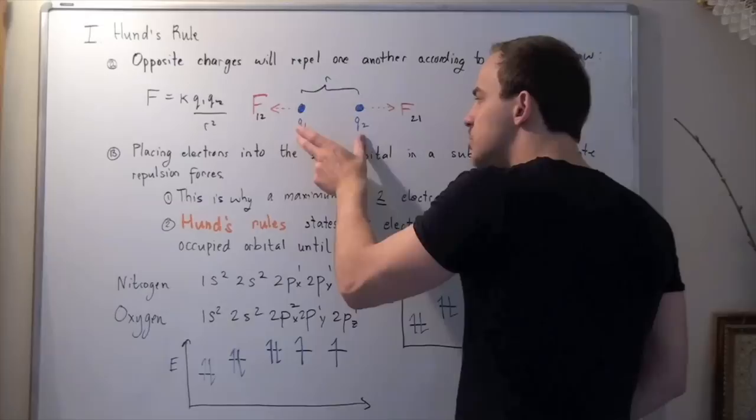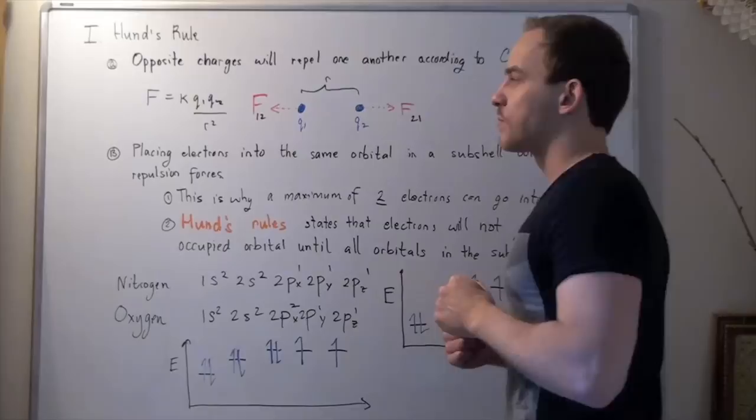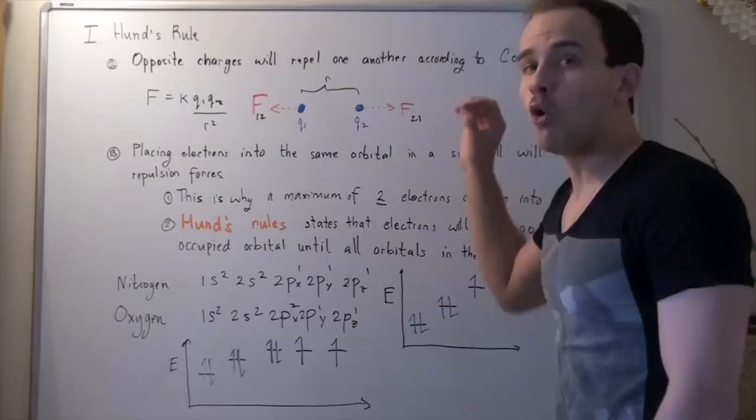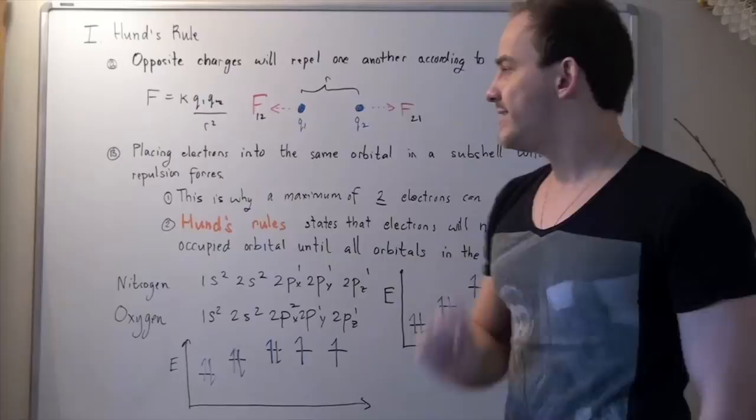So, what Coulomb's law says is the following. If we place two electrons next to each other, they will repel. They will create repulsion forces. So, this leads into the following fact. In fact, placing electrons into the same orbital in a sub-shell will create repulsion forces.